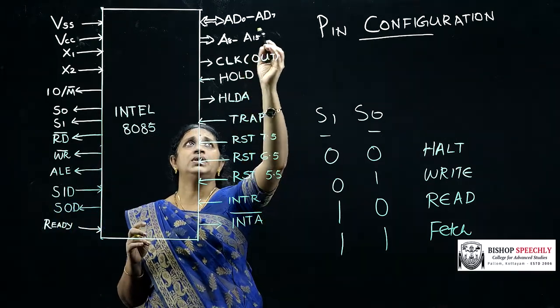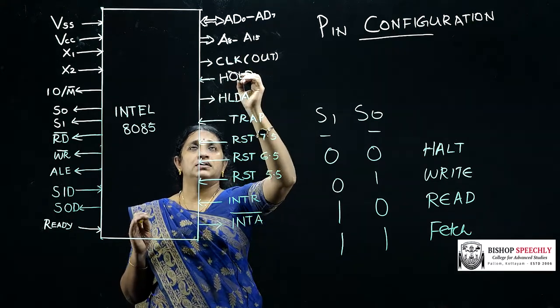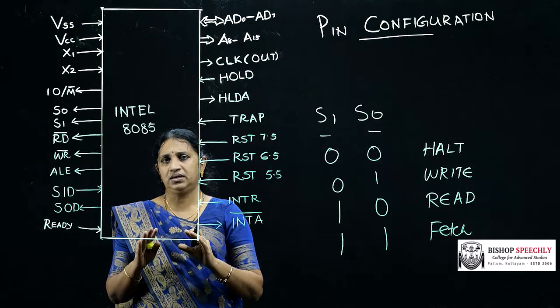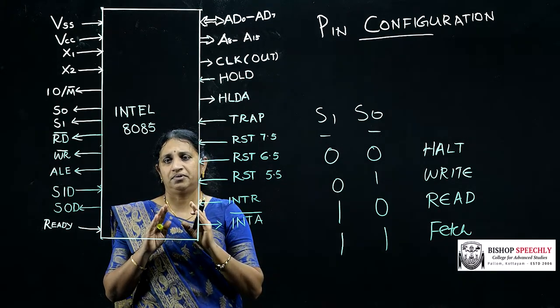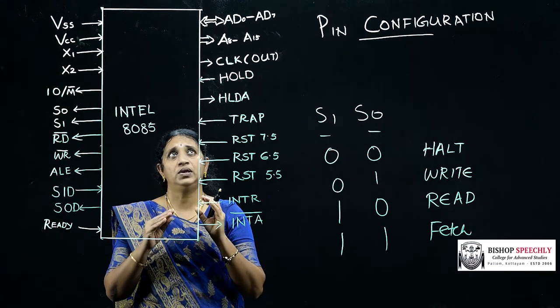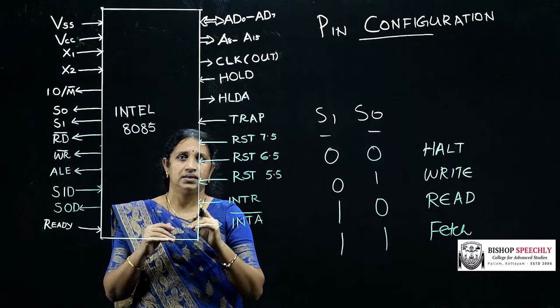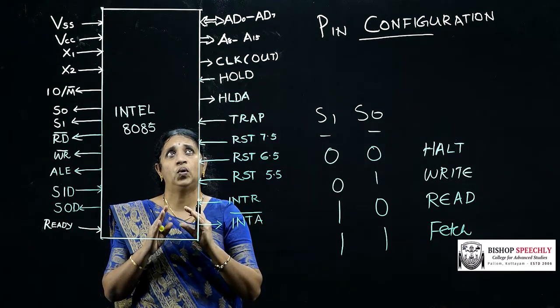The next pins are AD0 to AD7. There are eight pins. They are both address and data. That is they could carry both address and data but only one value at a time. That is at the first clock cycle the value in the AD0 to AD7 bus will be address. And in the next clock cycles they can be used for holding data.